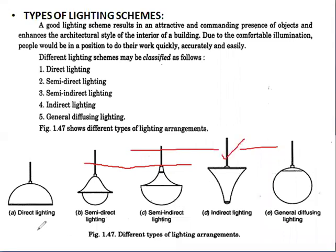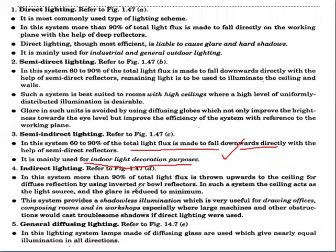In indirect lighting, more than 90% of the total light flux is thrown upwards to the ceiling for diffused reflection, using an inverted bowl reflector. In this system, the ceiling acts as the light source and glare is reduced to its minimum value. This system provides shadowless illumination, which is very useful in drawing offices, composing rooms, and workshops where large machines and other obstructions would cast troublesome shadows if direct lighting were used.